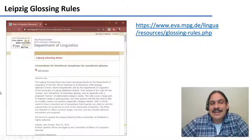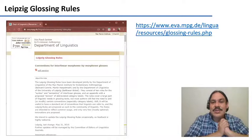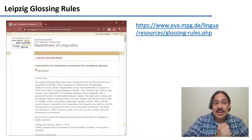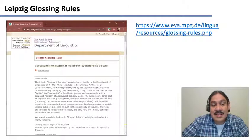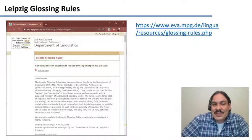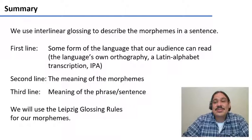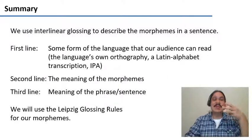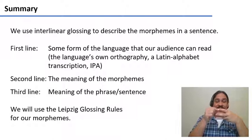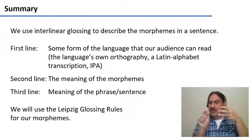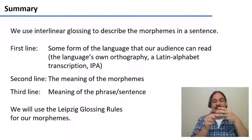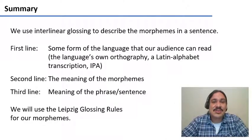That's how glossing works. I encourage you to go visit this webpage, which is the Leipzig glossing rules — the set of instructions that we're going to follow to document languages. It's also very useful to get ideas of how different languages work. In summary, we use interlinear glossing to describe the morphemes in a sentence, and it has three main components: the language so the audience knows what it sounds like — it can be the orthography or IPA; the second line is the meaning of each of the morphemes, separated by dashes, with meanings within a single morpheme separated by dots; and then the third line has the meaning of the whole phrase or structure. This system is called the Leipzig glossing rules.